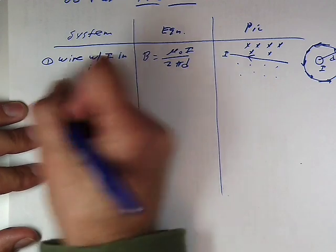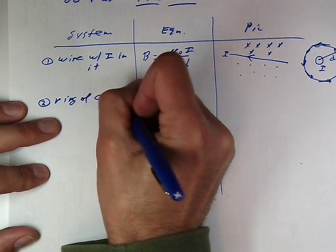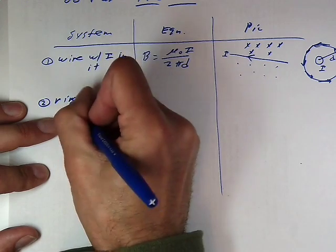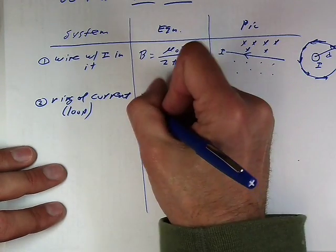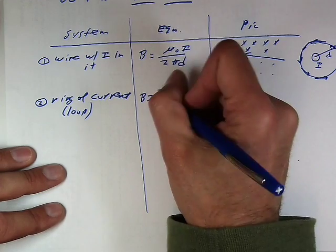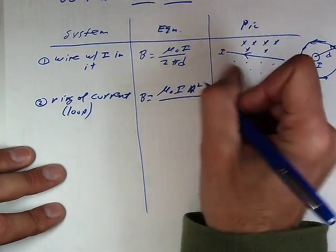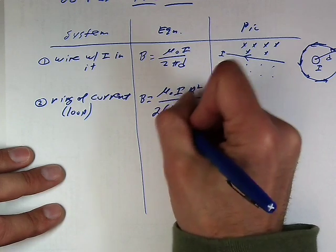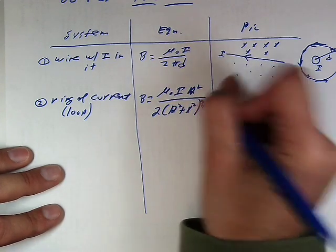In the second case we have here, now we have a ring of current. We just got the results here. Sometimes you can also call this just the loop of current. And what we have determined here is that the magnetic field due to the loop of current is mu naught I r squared over 2 times the quantity r squared plus x squared to the 3 halves power. We have a result.